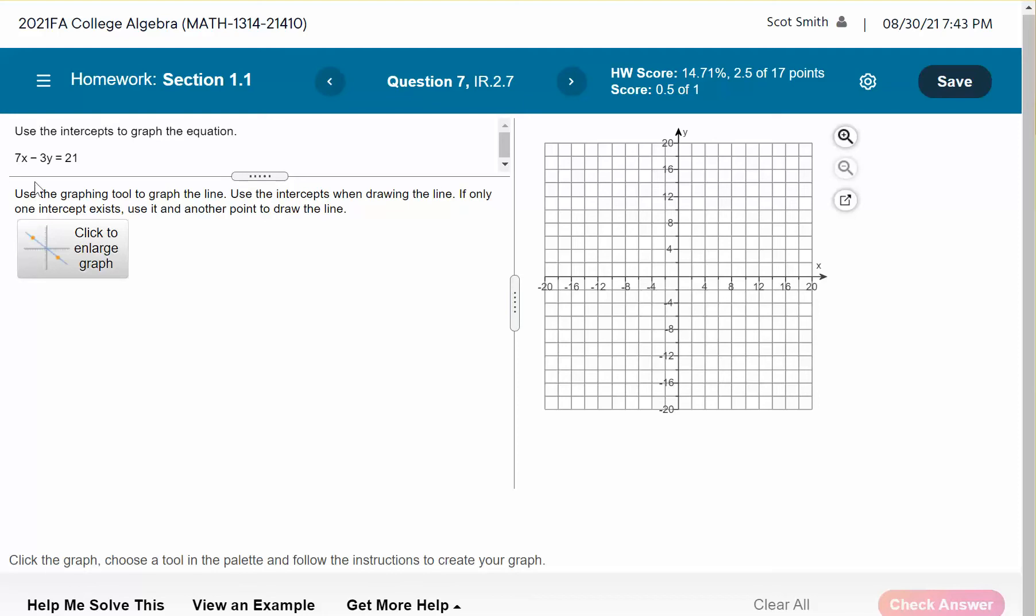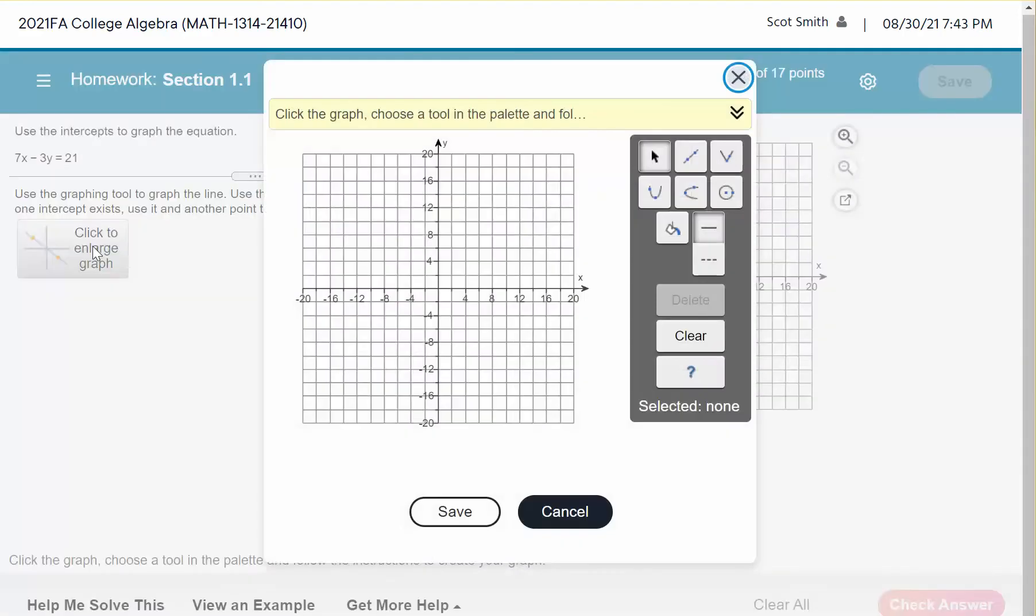In that video, we used the x and y intercepts to graph this line, and we got the point 0, negative 7, and the point 3, 0. So we want to click here to enlarge the graph, and then this is what we call a template for the line. See the two points? In a line, it wants two points. Notice if I did a parabola, it would want two points, and so the picture indicates how many points it's looking for.